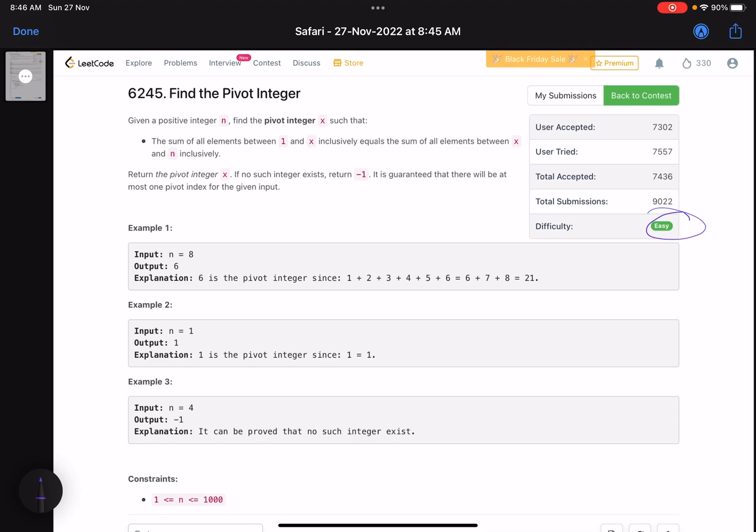The problem statement says: given a positive integer n, find the pivot integer x such that the sum of all elements between 1 to x inclusively equals the sum of all elements between x and n, including those two integers. Return the pivot integer x. If no such integer exists, return -1. It is guaranteed that there will be at most one pivot index for the given input.